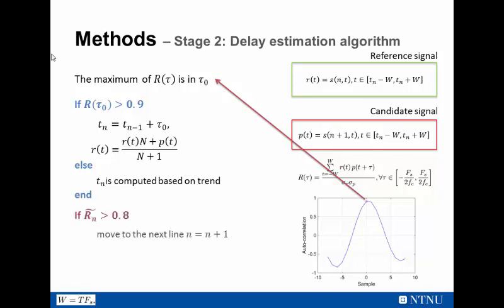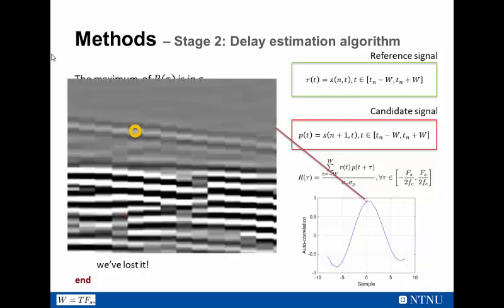Otherwise, I can calculate the delay as a trend based on previous values. I also keep a running average of the maximum correlation values for each RF scanline. So if that value is greater than 0.8, I can move to the next scanline. Otherwise, I'll stop because I consider that I have lost the pulse. So well, this will work in theory, but in order to do that, I really need a good seed. A seed that is sitting precisely on top of the lumen-intima pulse. But that is quite difficult to get.